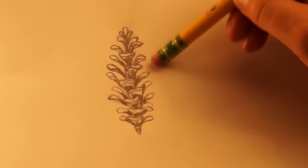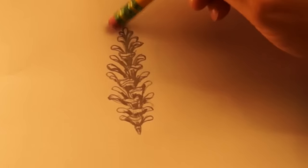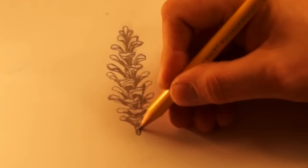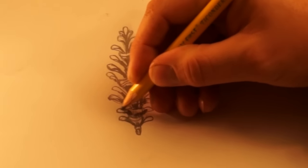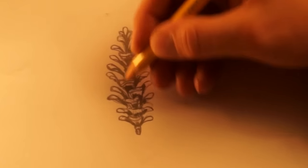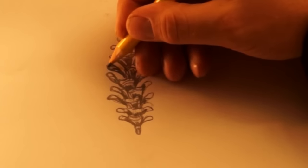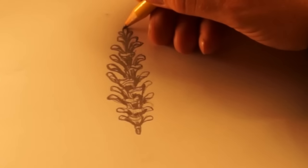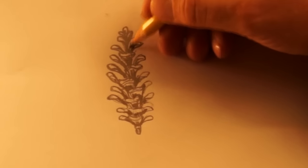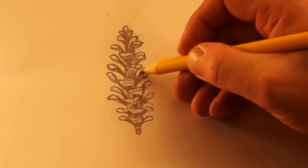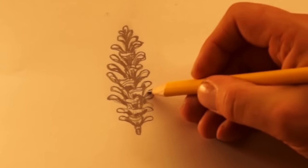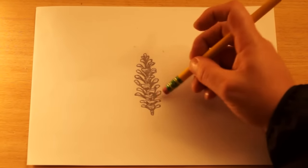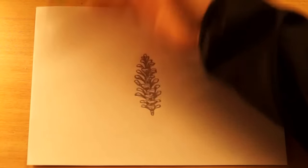Okay. Now, lastly, we want to go ahead and erase any extra lines that might be sticking out. One more thing, I do want to go around the outside edge and just kind of go along the contour of the outside edge and make it darker. Okay, now clean up any extra lines.